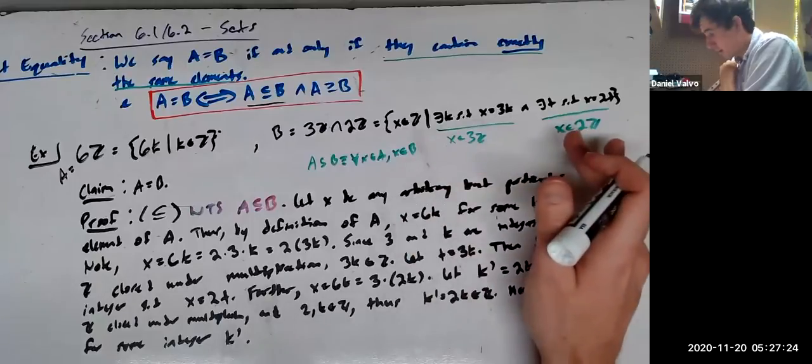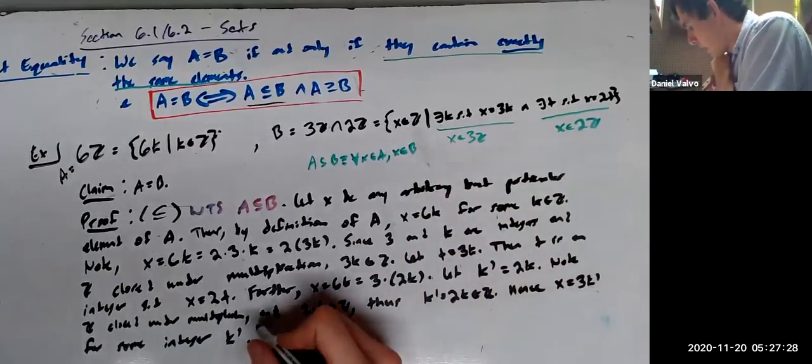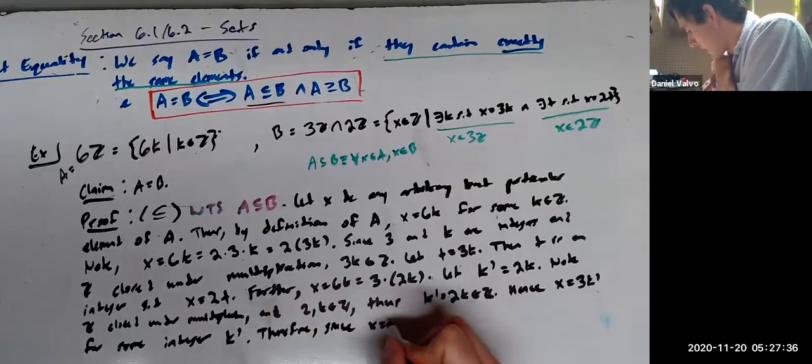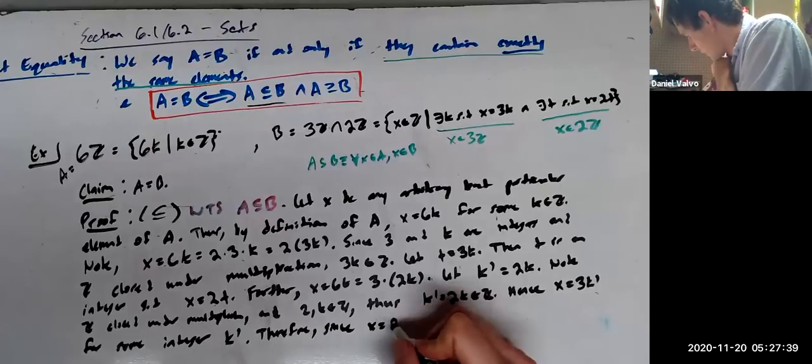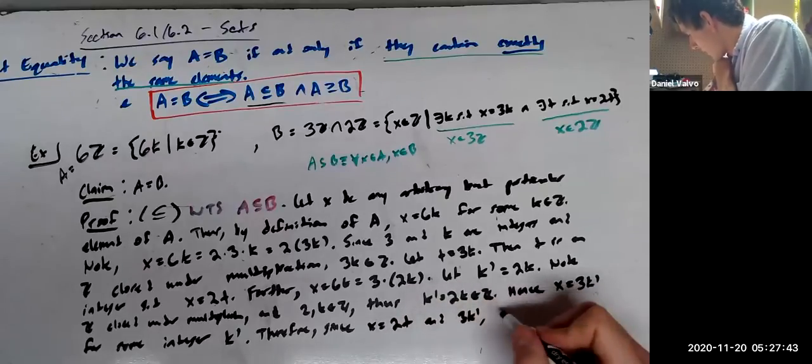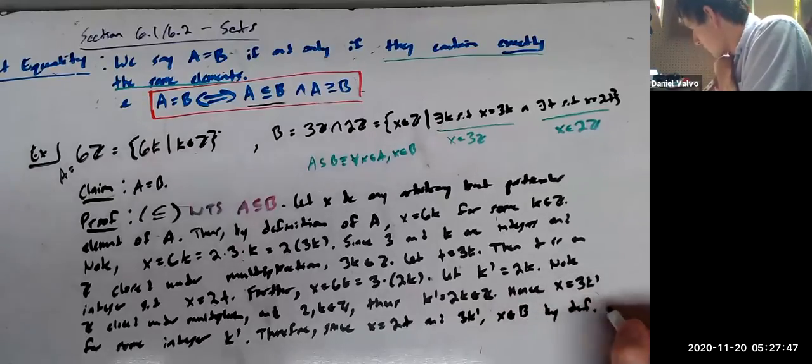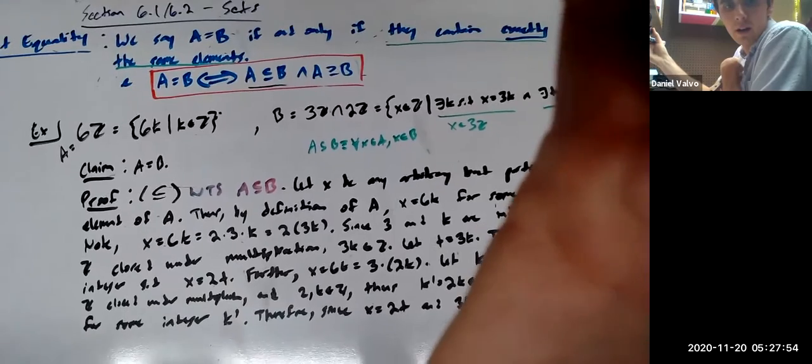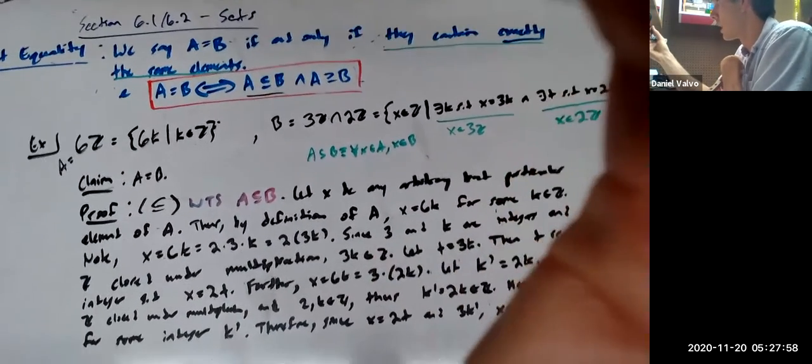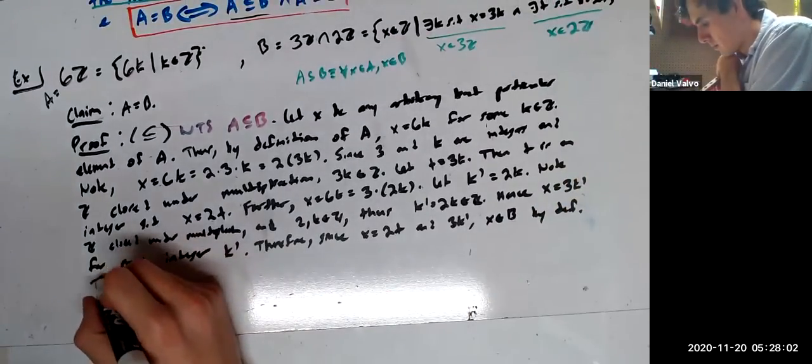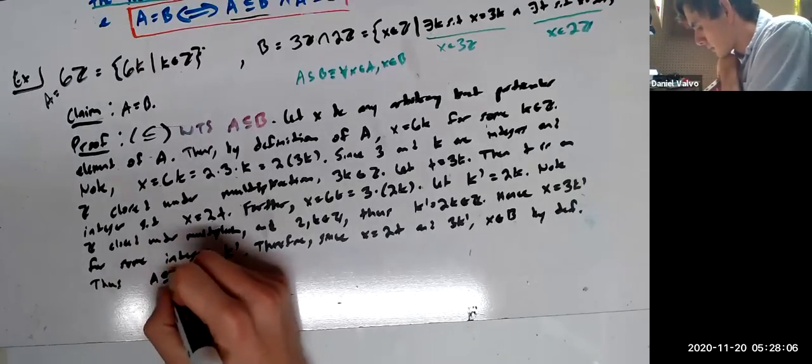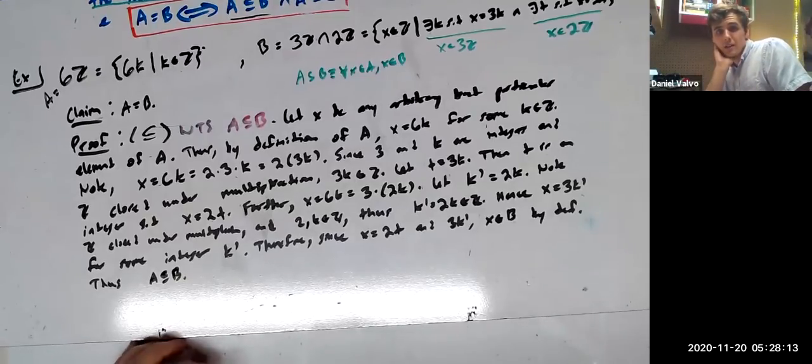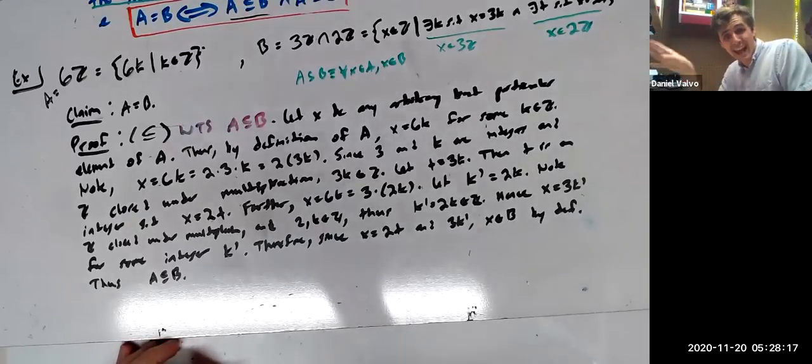Hence, x equals 3k prime for some integer k prime. There's an exclamation mark. It's a prime period. There we go. So, we know that x can be written as 3k and x can be written as 2t for some integers k and t. Therefore, x is in B. Right? Because B is just all integers that can be written like this. So, I'll say hence, I'll say therefore, since x equals 2t and 3k prime, x is in B by definition of B. And then very last line here. Thus. Thus. Thus, a is in B. So, all of this work was just to prove that A is contained in B.